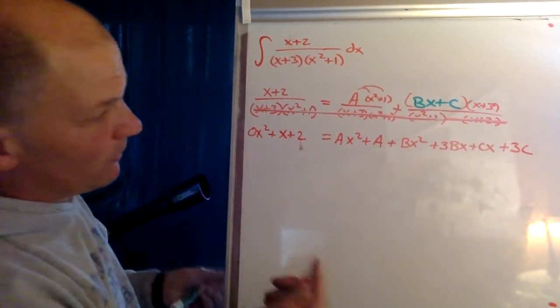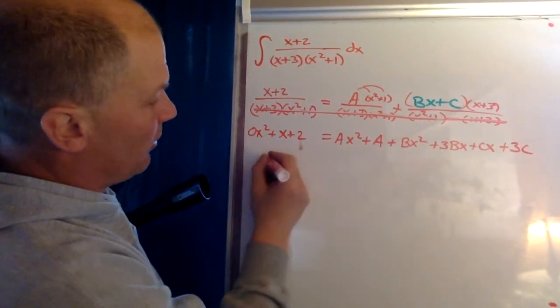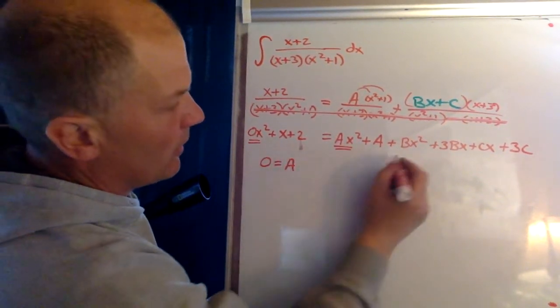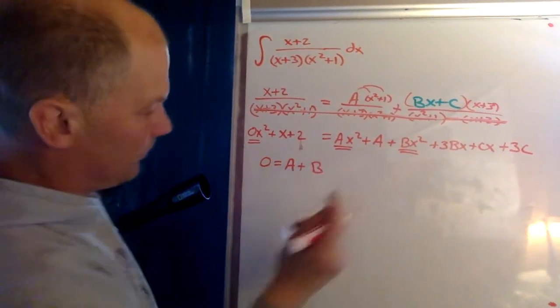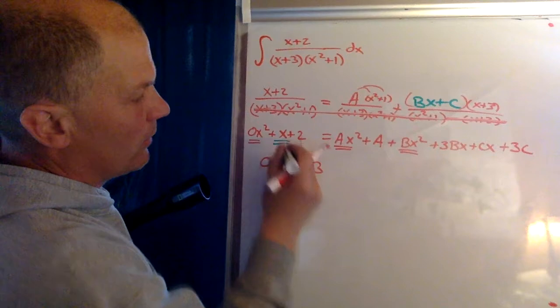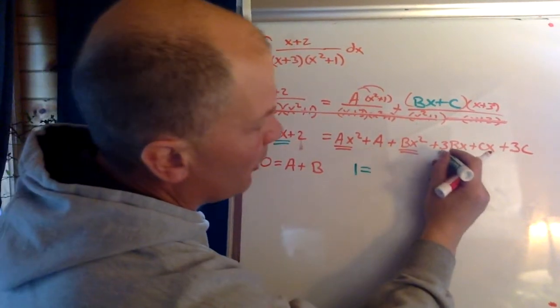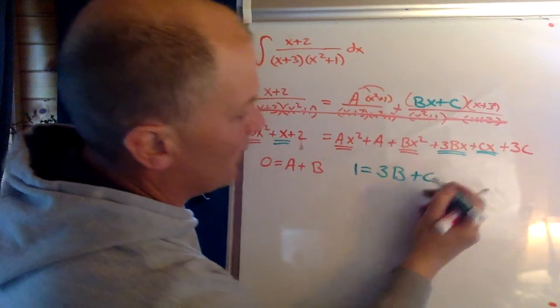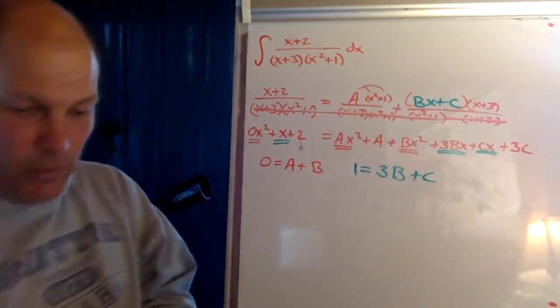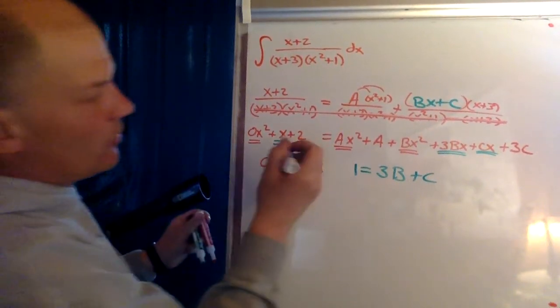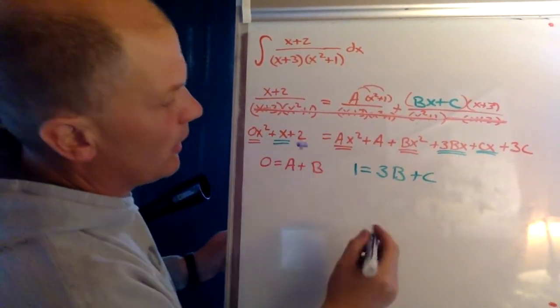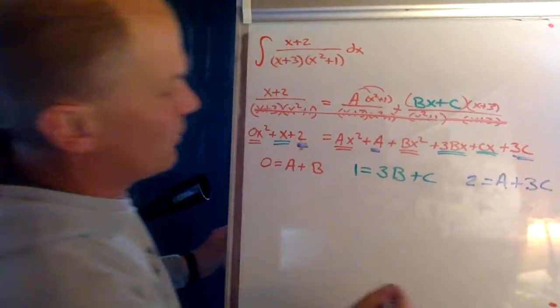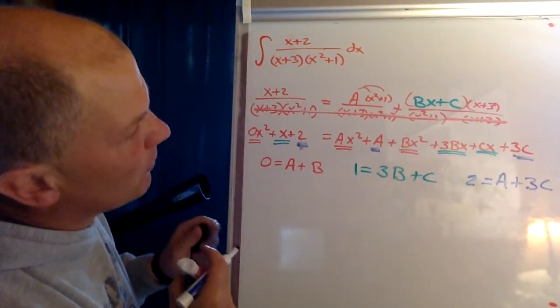So I'm gonna write down the three different equations that we have. We have zero. I'm gonna do this like this. Ax squared, so zero equals a plus b. One. So one x equals 3b plus c. And then my last equation, I'll use a new color here, is that this two right there, that two has to equal a plus 3c. Two equals a plus 3c.